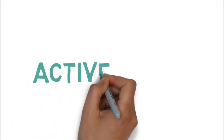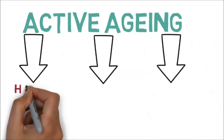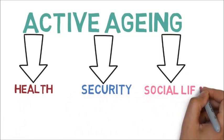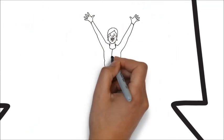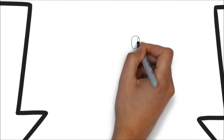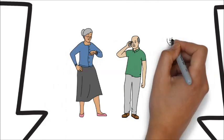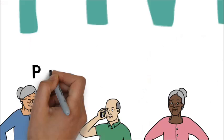Active aging is a process that consists in optimizing opportunities for health, security, and social life in order to improve the quality of life as people age. Active aging applies to both individuals and population groups. It allows people to fulfill their physical, social, and mental potential throughout the rest of their lives while participating in society according to their needs, desires, and capacities.